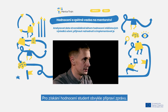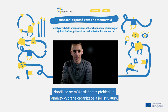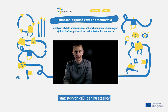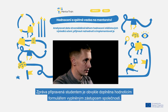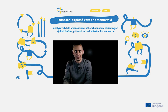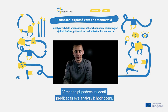To get an assessment, the student usually compiles a report. For example, it can consist of an overview and analysis of the chosen organization and its structure, a statement of the apprentice's goals, a daily diary of the apprenticeship, and a final analysis and self-reflection about one's experience. The report compiled by the student is usually supplemented by an evaluation form filled by the company's representative. In many cases, students present their analyses to an assessment committee.